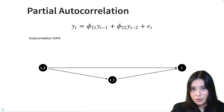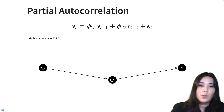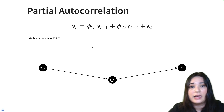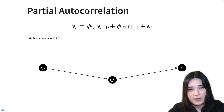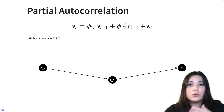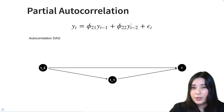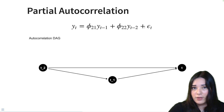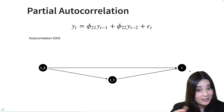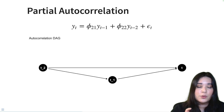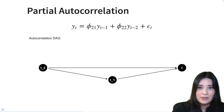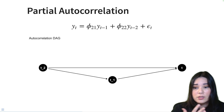Let's talk a little bit about partial autocorrelation. We might have a time series where the value of our current time series depends on at least the previous value, y(t-1), and the value two timesteps ago, y(t-2). Here we're saying that the value of our time series is some coefficient φ₂₁ times the value at the previous timestep, plus a different coefficient φ₂₂ times the value two timesteps ago, plus a little bit of error. If we drew a DAG of the relationship between our previous timestep t-1, and the timestep before that t-2, on our current value, it would look something like this.